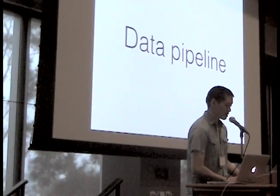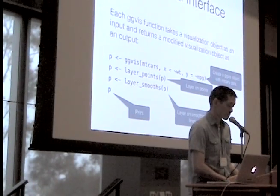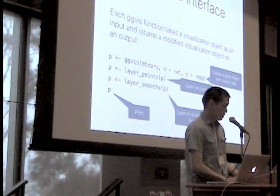That's a brief overview of the syntax and how it's similar to ggplot2 with the grammar of graphics. The next part is the data pipeline. So ggbiz has a functional interface, and each ggbiz function takes a visualization object as an input and returns a modified visualization object as an output. In the first line of code there, we assign p to ggbiz with mtcars and some x and y mappings, and then in each line we modify that. We say p is layer_points, p is layer_smooths, and finally we print it just by typing p at the console, hit enter, and that will display it.